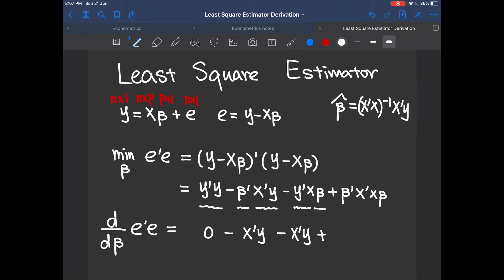And also plus. So here is a quadratic term with respect to beta. So you have a two in the front and then you keep the last three terms which are x transpose x beta.